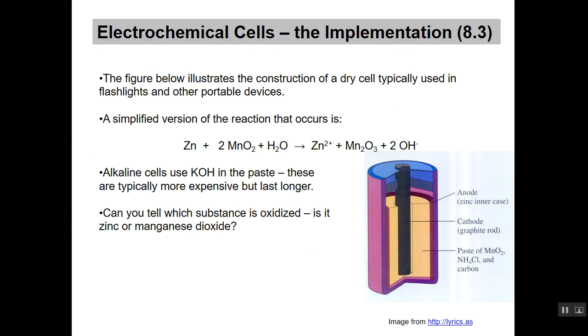If you look at a different type of electrochemical cell, here's a battery, a regular dry cell battery. It gives you a little bit of the construction inside. It has a paste of manganese dioxide and ammonium chloride and carbon, all these interesting things in batteries. I have a simplified version of the reaction written there. You don't have to memorize any of those, by the way. Alkaline cells are kind of like this too. They use KOH in the paste. They're a little bit expensive, but they last somewhat longer. If you look at that equation above, can you tell me which substance is oxidized? If you picked zinc, you'd be correct, because the zinc actually lost two electrons in that process.